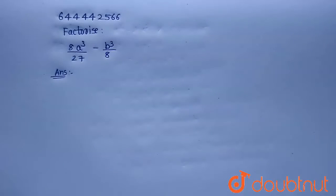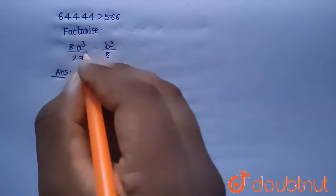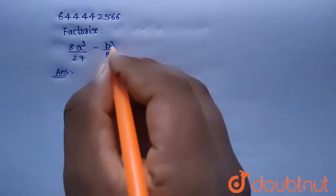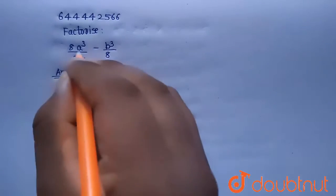Hello everyone. Today's question is: factorize 8A cube by 27 minus B cube by 8. So the given expression is 8A cube by 27 minus B cube by 8.